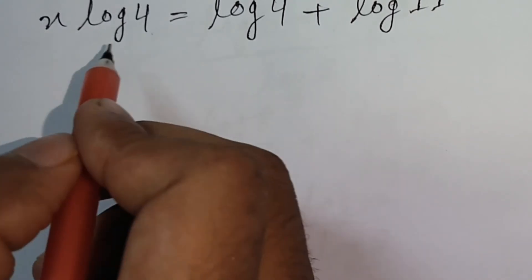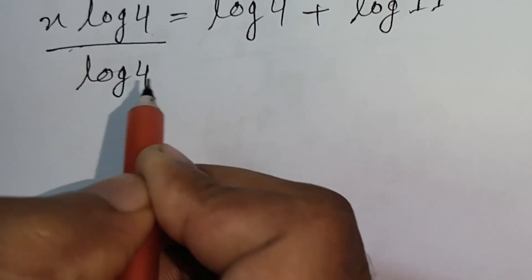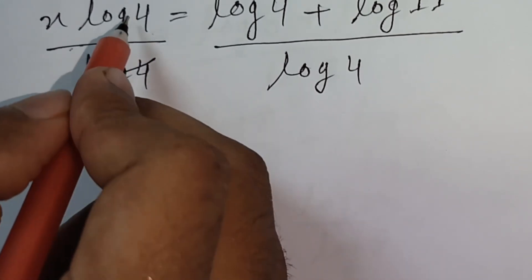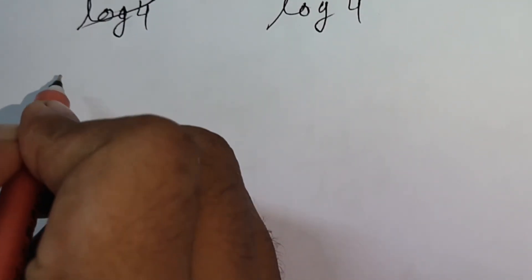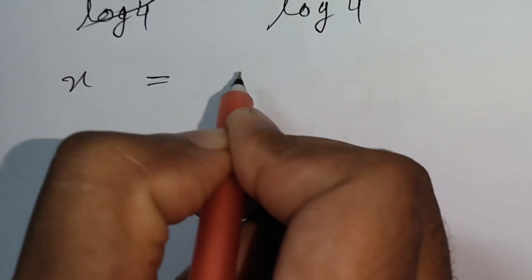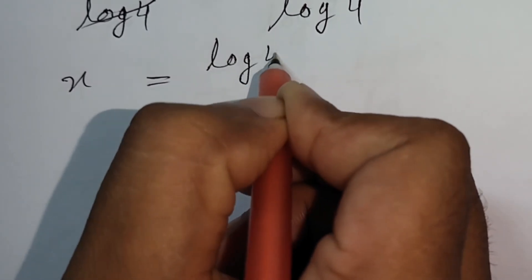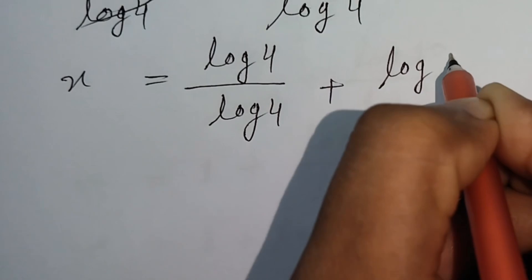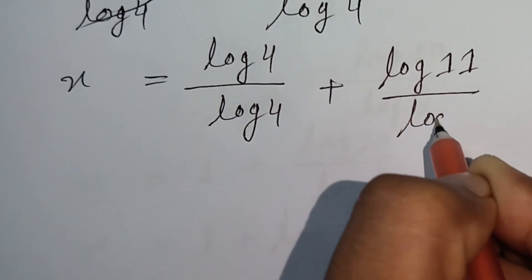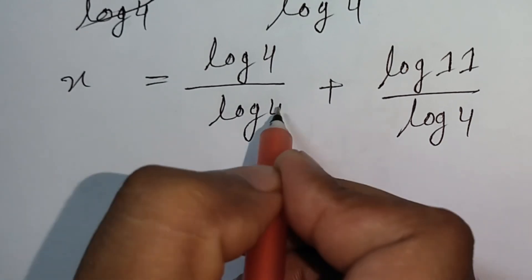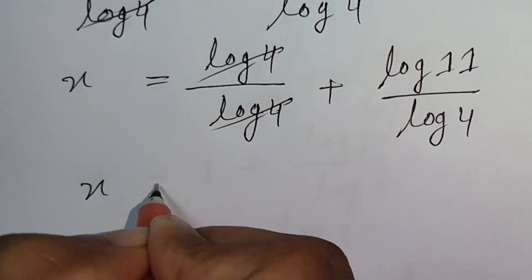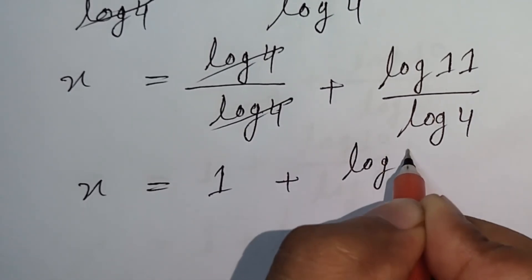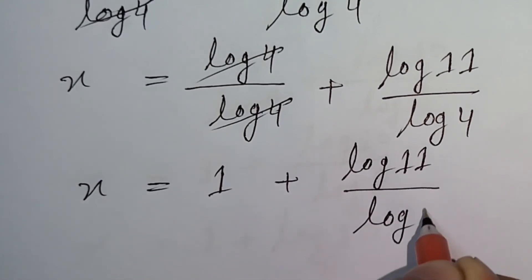Then both sides are divided by log 4. Log 4 and log 4 will be cancelled. x is equal to log 4 divided by log 4, plus log 11 divided by log 4. Log 4 over log 4 cancels, so x is equal to 1 plus log 11 divided by log 4.